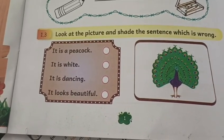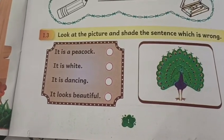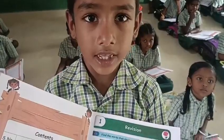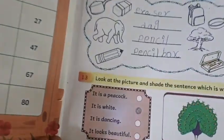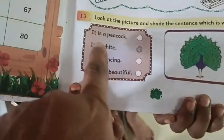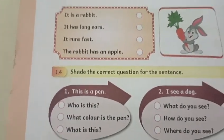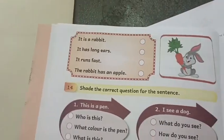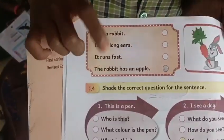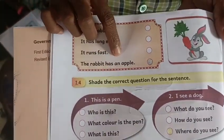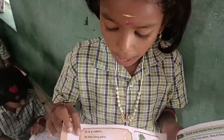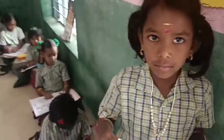Look at the picture and share the sentence. Which one is wrong? It is white. Next one — which one is wrong? Tell me, Srimati. The rabbit has an apple. Which one is the correct answer? The rabbit has a carrot. Good. A carrot. Good.